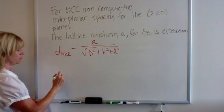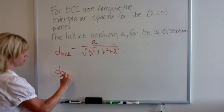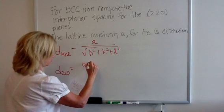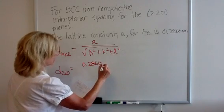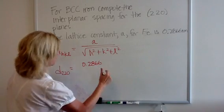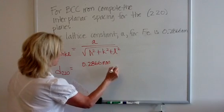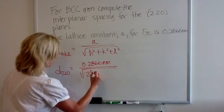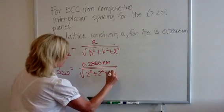We've been given everything that we need so we can say d220 is equal to a which is 0.2866 nanometers. This is over the square root of 2 squared plus 2 squared plus 0 squared.